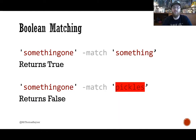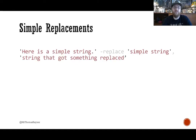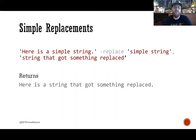This one returns false because the regular expression 'pickles' isn't found in the string that you gave it. This sequence of characters was searched for and not found in the supplied text, so match says false. You can do simple replacements — PowerShell has a built-in operator called Replace. You have a simple string and then it's replacing something with something else. The Replace operator takes the string you're examining, a regular expression, and then a comma separating the value you're going to replace it with.